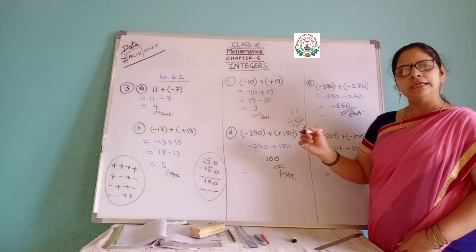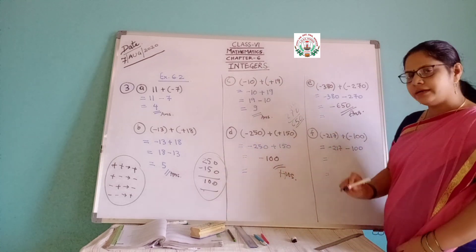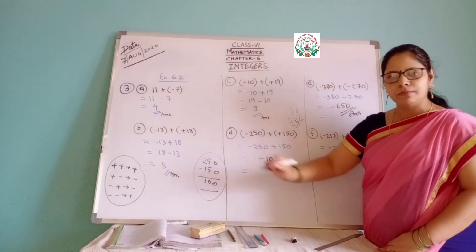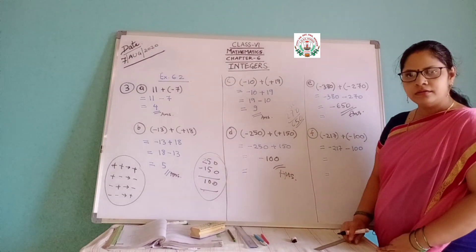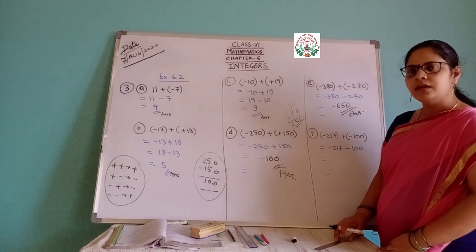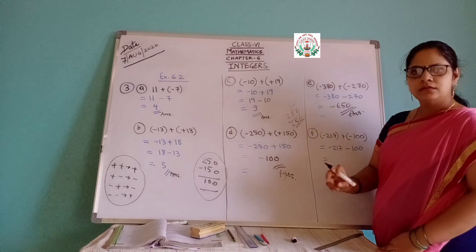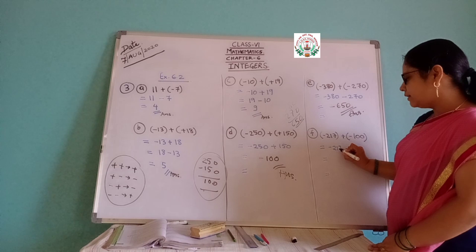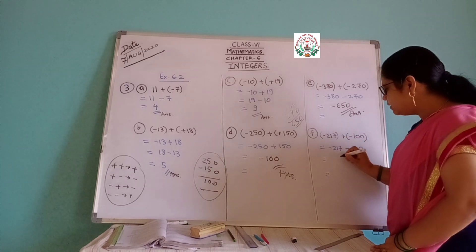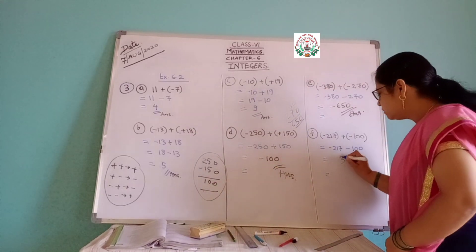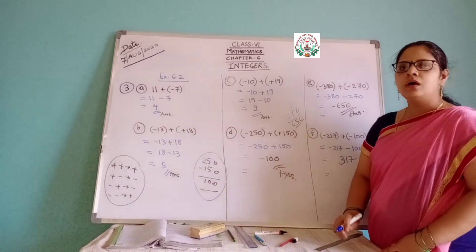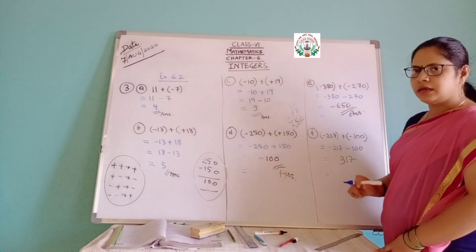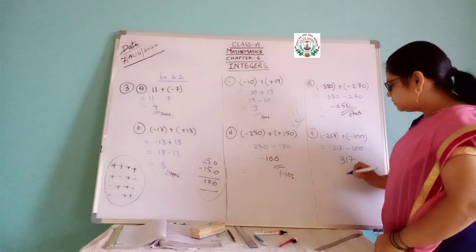Coming to the next part — it is the same way. Minus 217, copy down the same. Plus and minus — different sign — minus. So minus 217 and minus 100. Minus and minus — same sign — plus, means addition. 217 and 100 gives 317. Now which is the greater number? 217 is greater, having minus sign. So that minus comes in the answer — the answer is minus 317.